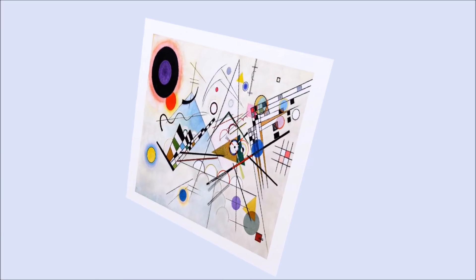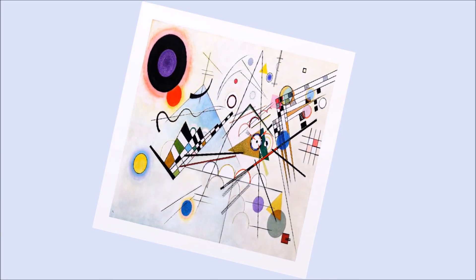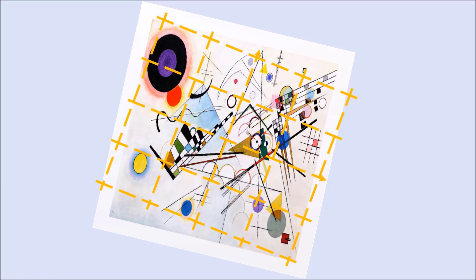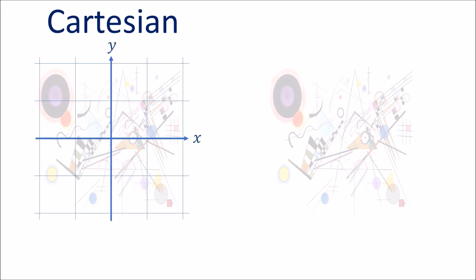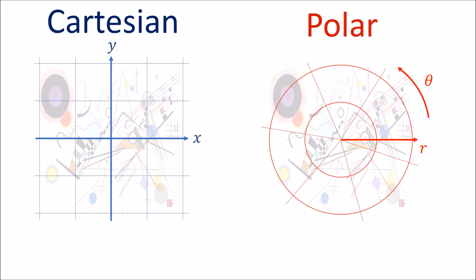Now we can see all these geometrical objects in front of us, but it can be difficult to say anything interesting about them without using numbers in some way, and this is where coordinate systems come in. Coordinate systems are like little grids that we put over top of a geometrical space so that we can calculate things like the distance between two points, or the length of a curve. The two most common coordinate systems for the flat two-dimensional plane are the Cartesian coordinate system and the polar coordinate system.